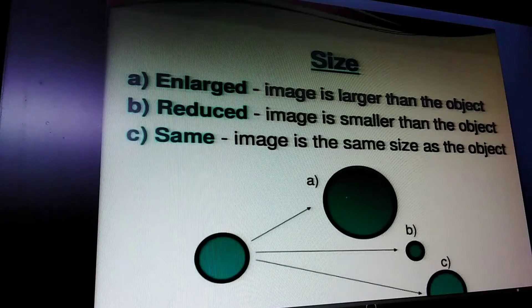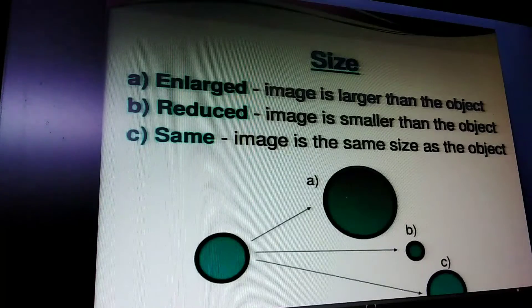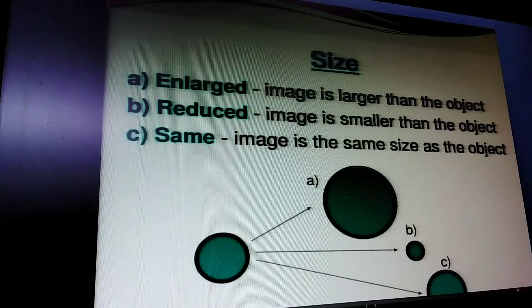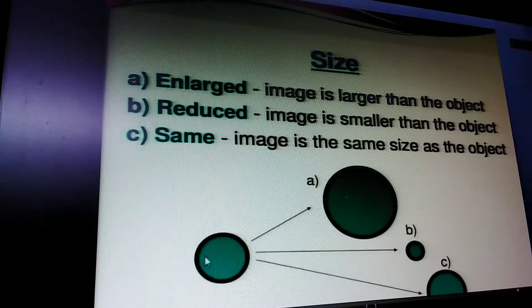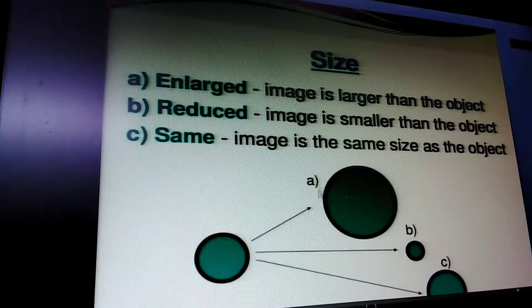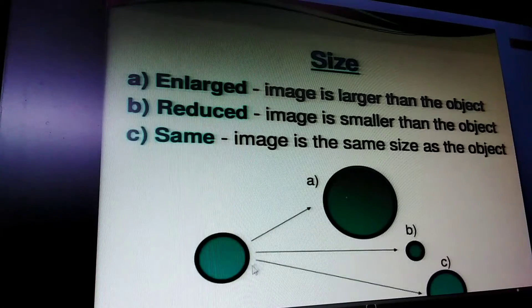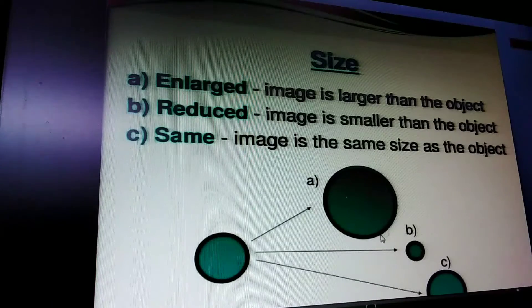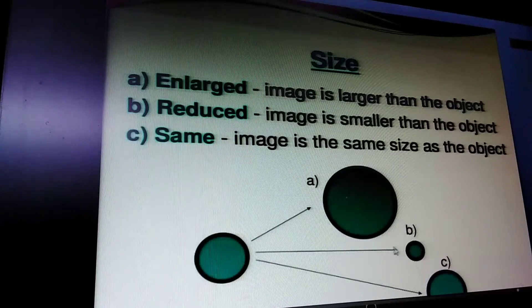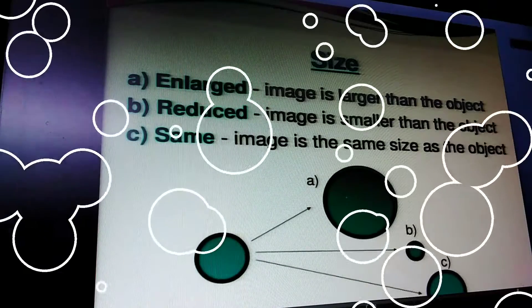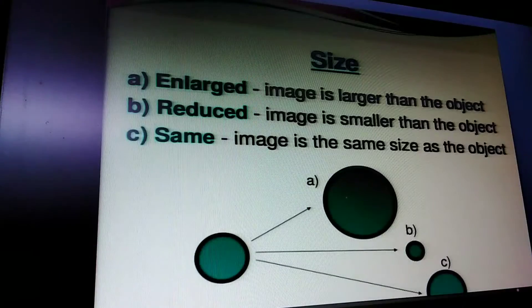Now coming to sizes. An enlarged image is bigger than the object. A diminished image is smaller than the object, or the image can be the same size as the object.